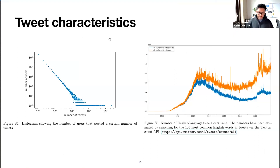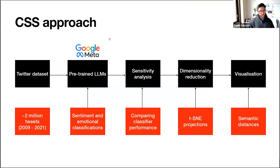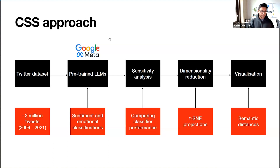These are more technical details about tweet and retweet characteristics that help us understand network dynamics. This is where computational social science becomes interesting — we have an interesting dataset and can't simply use computer science approaches; there needs to be a theoretical basis. We used pre-trained large language models by Google and Meta to capture sentiments and emotions as classifiers, with lots of sensitivity analysis. The theory is quite important to understand which technologies are more susceptible to specific emotions or public attitudes.